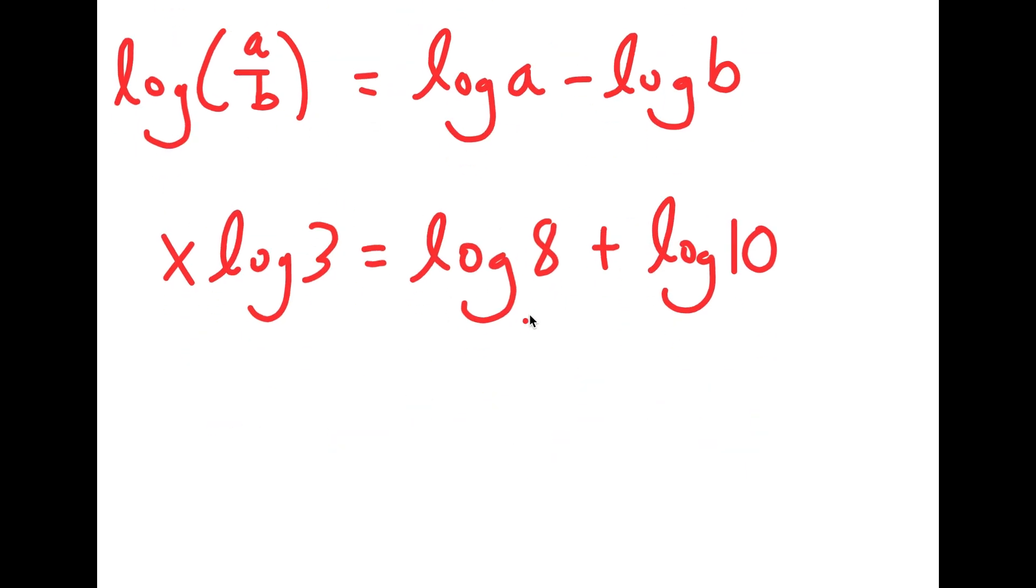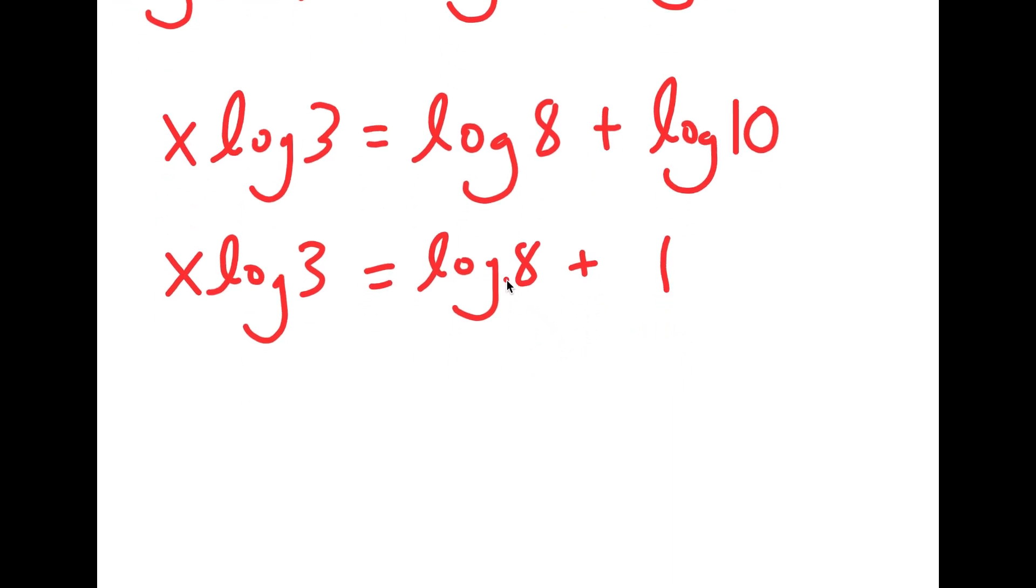Now, if you guys already didn't know, log 10 is simply equal to 1. So I get x times log 3 is equal to log 8 plus 1. And now remember, we want to isolate x. So the only thing left to do is to get rid of this log 3 by dividing both sides by log 3.